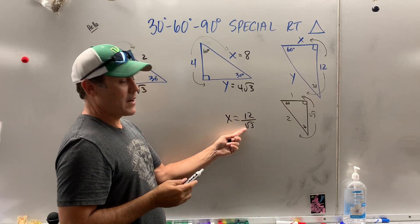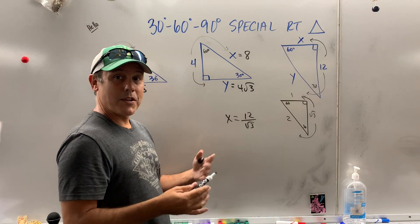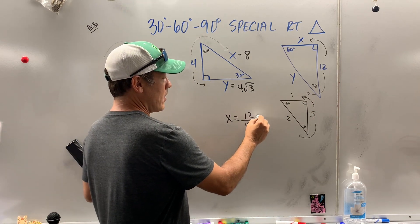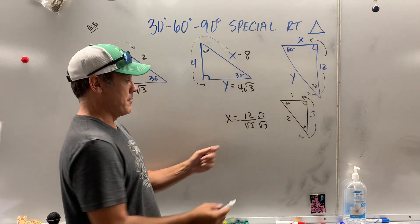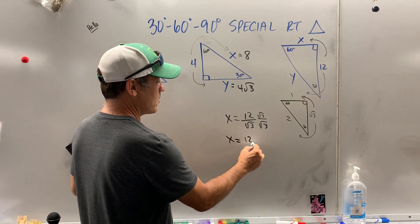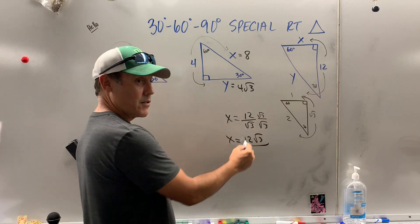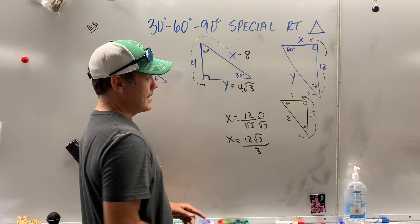Okay, well, we don't like radicals downstairs. So, we're going to what's called rationalize the denominator. And all you do is multiply top and bottom by the denominator. So, x is equal to 12 times radical 3 is 12 radical 3. Square root of 3 times square root of 3 is 3.